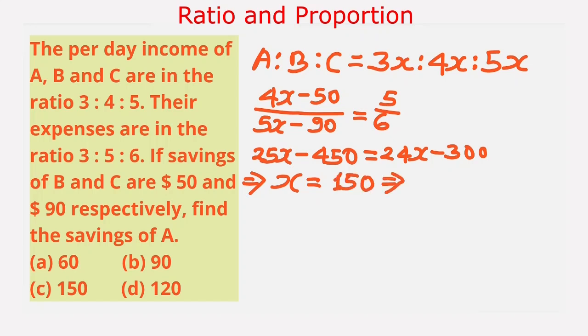From here we can find the income of B which is 4x. So 4x equals 150 times 4 equals 600, and expenses of B equals 600 minus 50 equals 550.